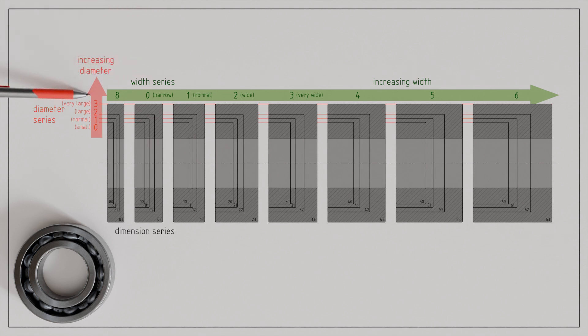Additional diameter series were also added later. For example, diameter series 4 was introduced for larger bearings. Additionally, smaller bearings were added, which are designated in descending size as 9, 8, and 7.